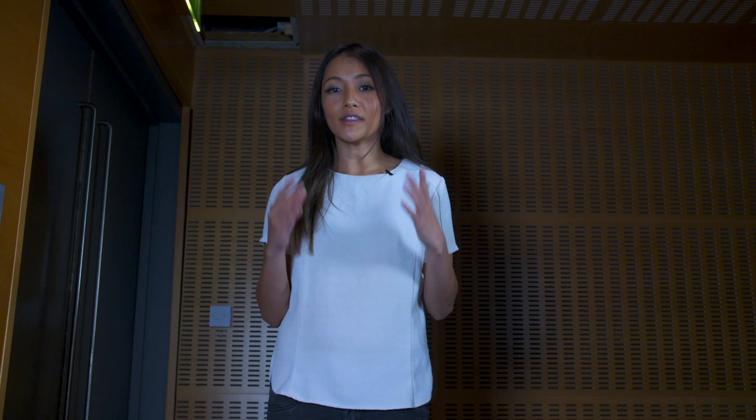When a gravitational wave passes through, it stretches spacetime in one direction and squashes it in another. This effectively changes the distance travelled by the two beams and is detectable by giant interferometers such as LIGO in the USA. Their laser beams, however, are four kilometres long.